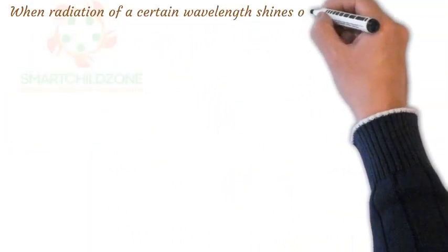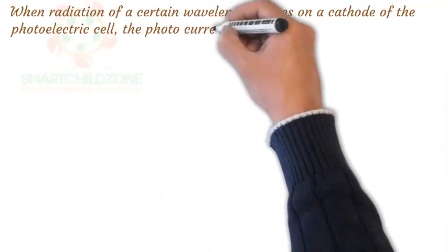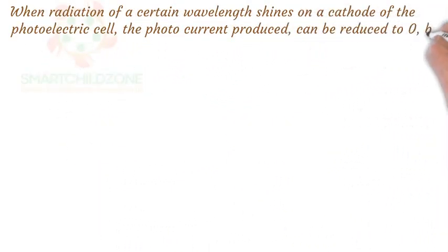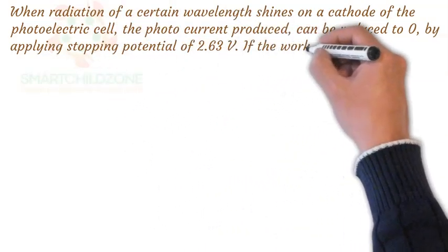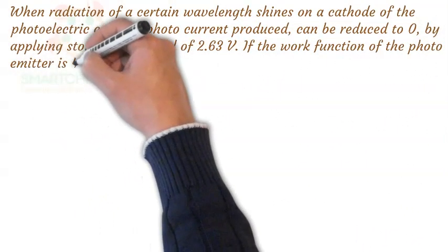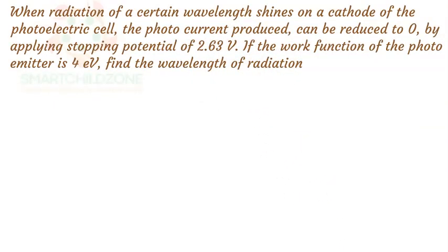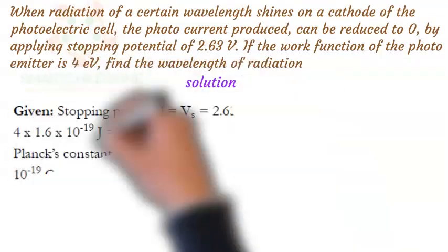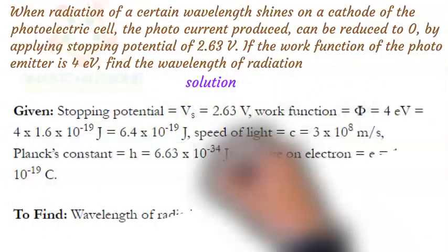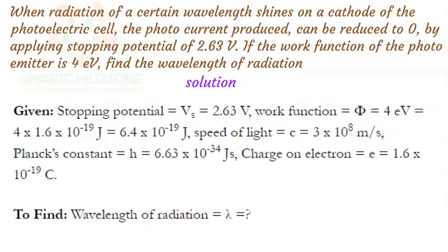When radiation of a certain wavelength shines on the cathode of a photoelectric cell, the photocurrent produced can be reduced to zero by applying a stopping potential of 2.63 volts. If the work function of the photoemitter is 4 electron volts, find the wavelength of radiation. We are given the stopping potential, work function, charge of electron, and we already know Planck's constant and speed of light. We can solve for this by using the Einstein photoelectric equation.